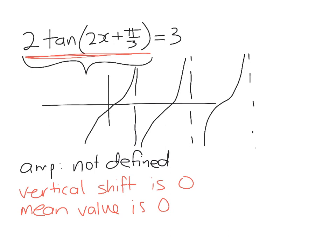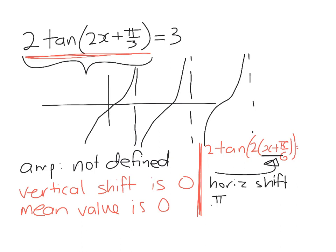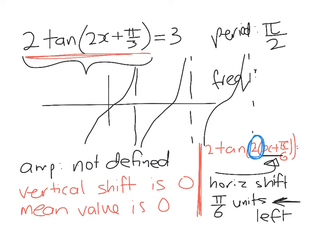Okay, now we can look at the horizontal shift and we can look at the period. So rewriting we get 2 tan of 2 times x plus π on 6 is equal to 3. So focusing on this bit here, we can see a phase shift or horizontal shift of π on 6 units to the left. And the last thing I'm going to squeeze in on this slide is the period of the function. Now tan's a little bit different because the standard period is just π. So when I have the 2 here, the period is going to be π over 2. And that means the flip side of that is that the frequency is going to be 2.